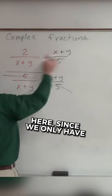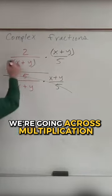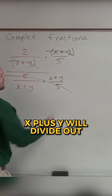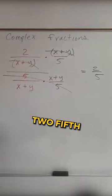Since we only have multiplication, we're going across multiplication. We know that x plus y will divide out with x plus y, so we're just left with 2 fifths.